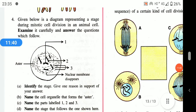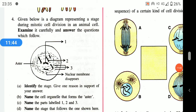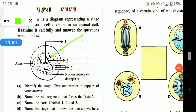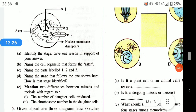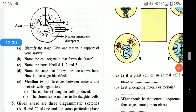A diagram represents a stage during mitotic cell division in an animal cell. Identify the stage — identification is done with the help of the dotted line representing the disappearing nuclear membrane — this is prophase. The cell organelle from which the aster originates is the centriole. Part 1 is the centromere, part 2 is the chromosome, part 3 is the spindle fiber. The stage that follows is metaphase.